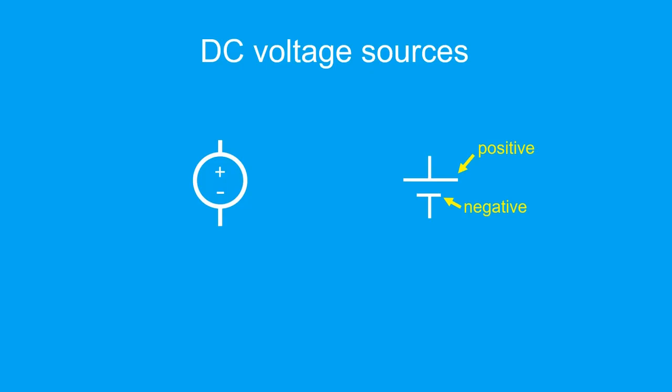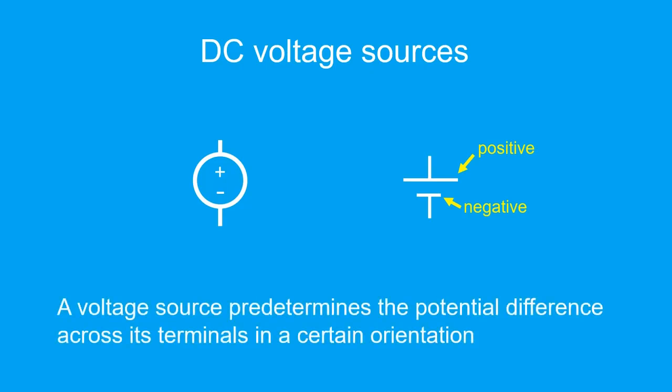What do these terminals mean? First, we must understand the function of voltage sources. Voltage sources actually predetermine the potential difference across its terminal, in a certain orientation.